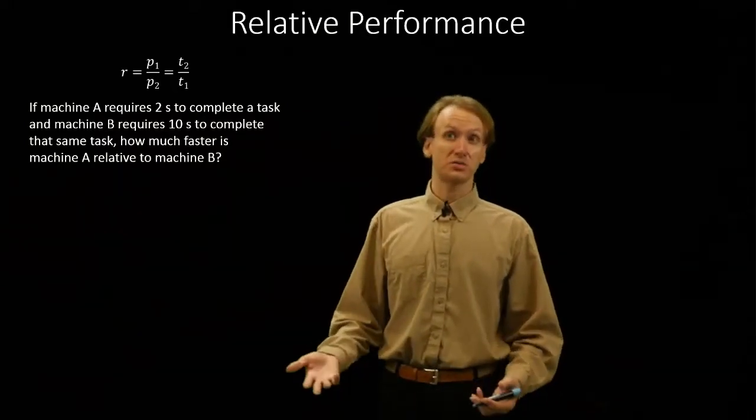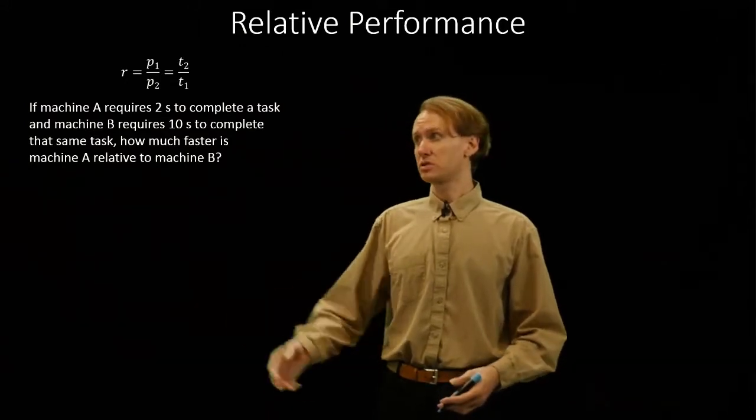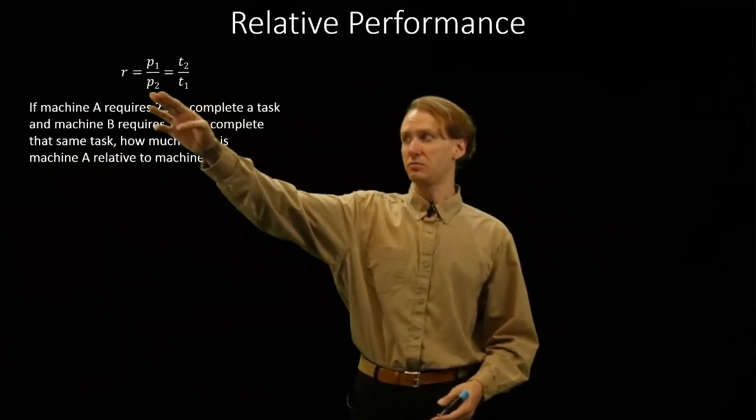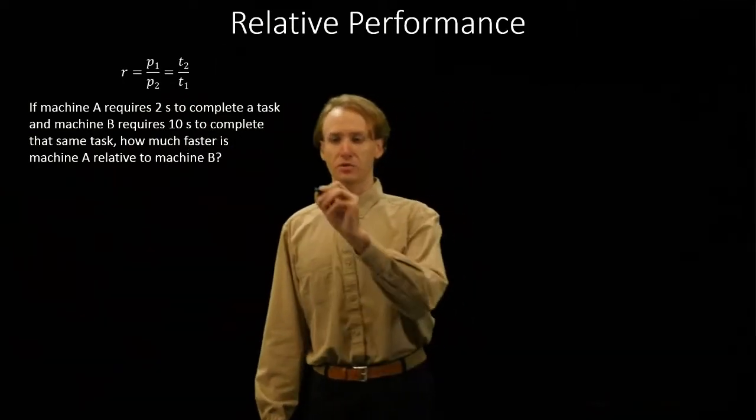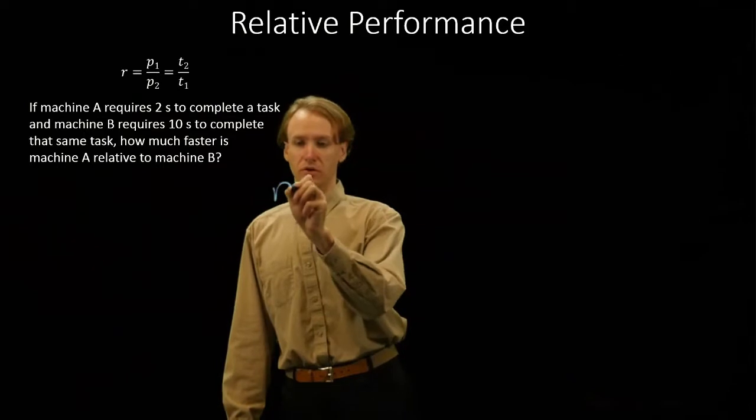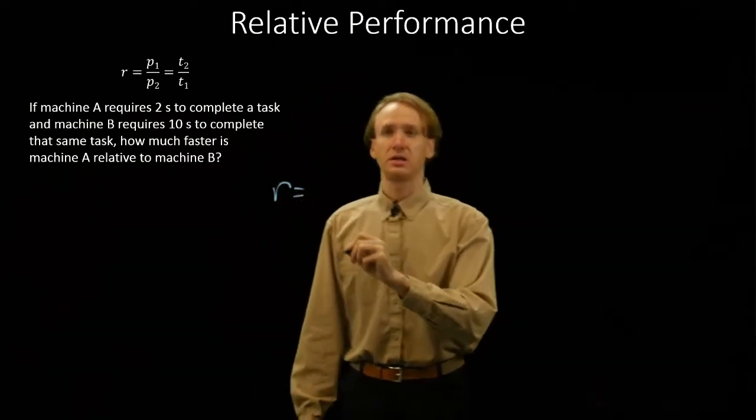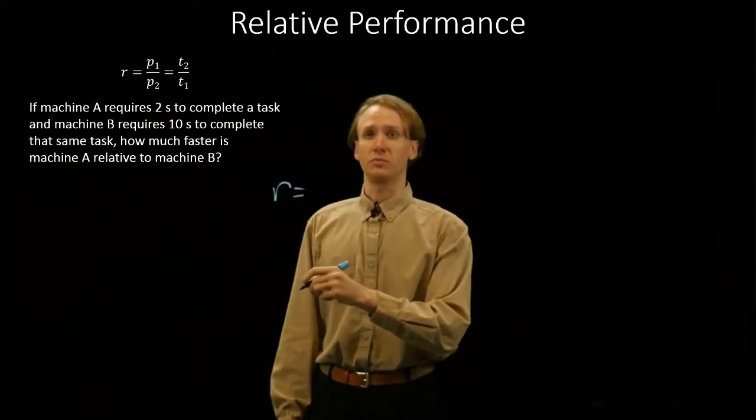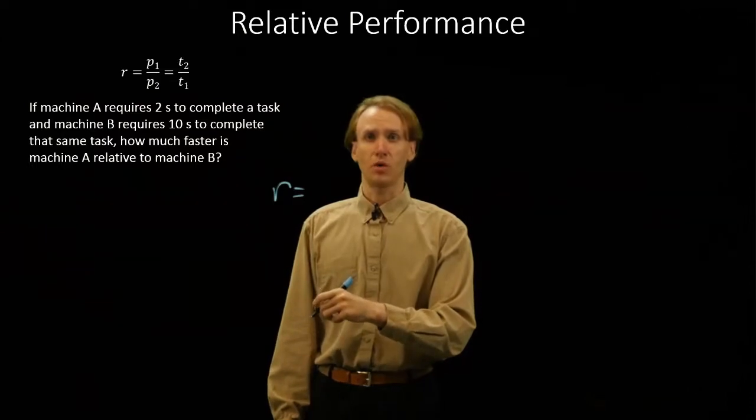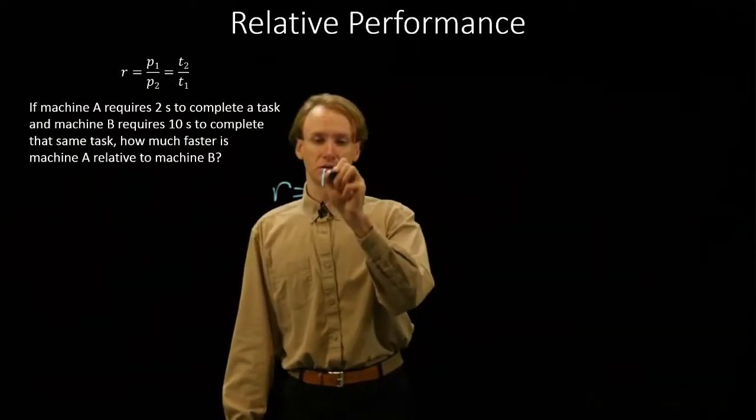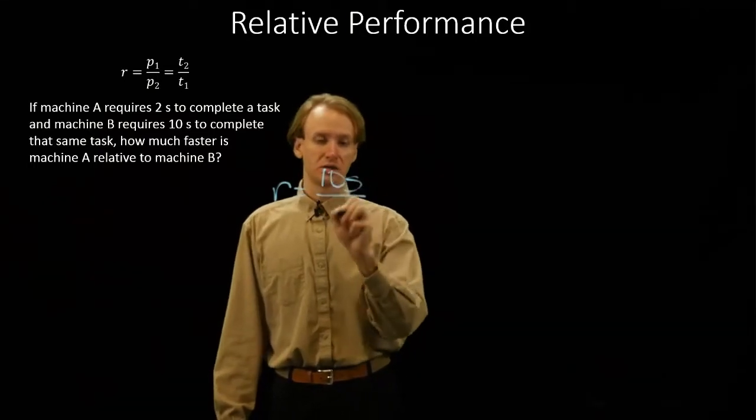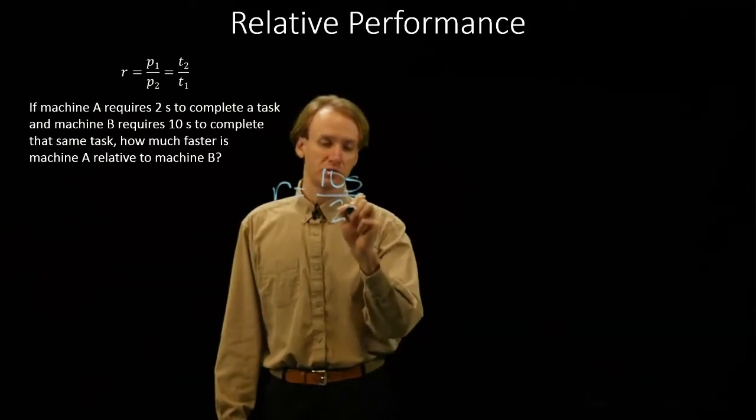So we have execution times, so we'll be more interested in using the execution time part of the equation than the performance side of the equation. And we'll just say that our relative performance is, we'll put machine A in for time one and machine B in for time two. So we'll get ten seconds divided by two seconds.